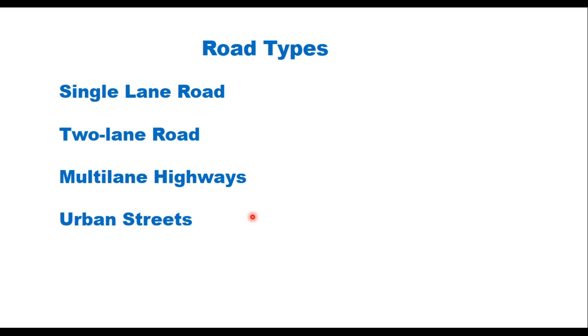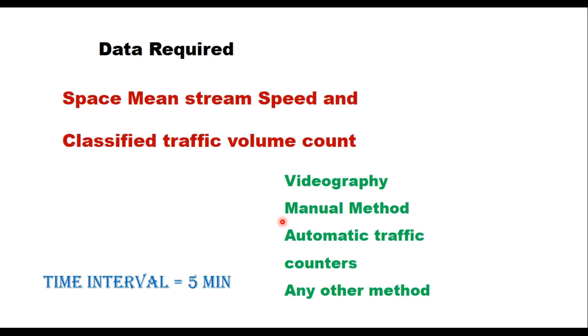You need two types of data for determination of capacity of a road segment: one is space mean speed and another is classified traffic volume count. These data can be collected by videography method, manual method, automatic traffic counters, or any other method.